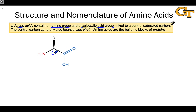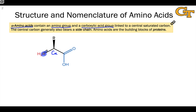Here we're using alpha in the sense that we've seen it in carbonyl contexts before — the carbon directly connected to the carbonyl carbon is the alpha carbon. When amino acids polymerize to form long chains in proteins, they do so through their amino and carboxylic acid groups.